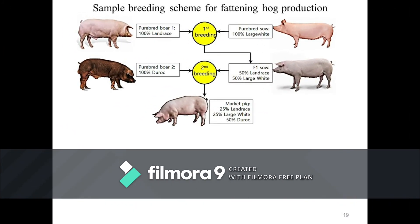This slide shows a typical breeding scheme for fattener hog production. The first cross is done between a purebred Landrace boar and a purebred Large White sow. These two swine breeds and their crosses are the most commonly used terminal dams in the production of market hogs, being known for their prolificacy and good mothering ability. Studies have shown that crossbreeds are superior to purebred animals in litter size and weight at birth and at weaning, and that mothering ability of crossbred sows is better than purebreds.